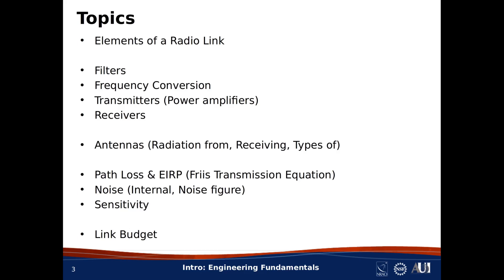The next three topics are all about antennas. In order, we'll talk about the radiating properties of antennas, the receiving properties of antennas, and then we'll do a quick survey of the various types of antennas. Then we'll be ready to talk about path loss and effective isotropic radiated power, EIRP, which are two concepts that emerge from the Friis transmission equation — the equation that lies at the heart of radiolink analysis.